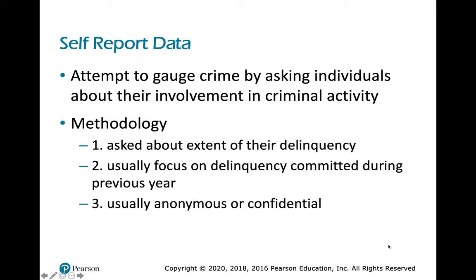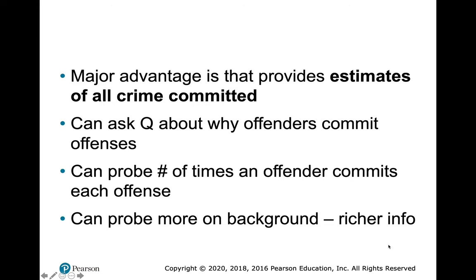We can also gather self-report data by asking people about their involvement in criminal activity. It works similarly to a victimization survey and is usually limited to the prior year. These surveys are often anonymous and confidential — otherwise people probably wouldn't answer them. The major advantage is that they can provide estimates of all crime committed, reveal why offenders commit offenses and how often, and give richer information about offenders' backgrounds.